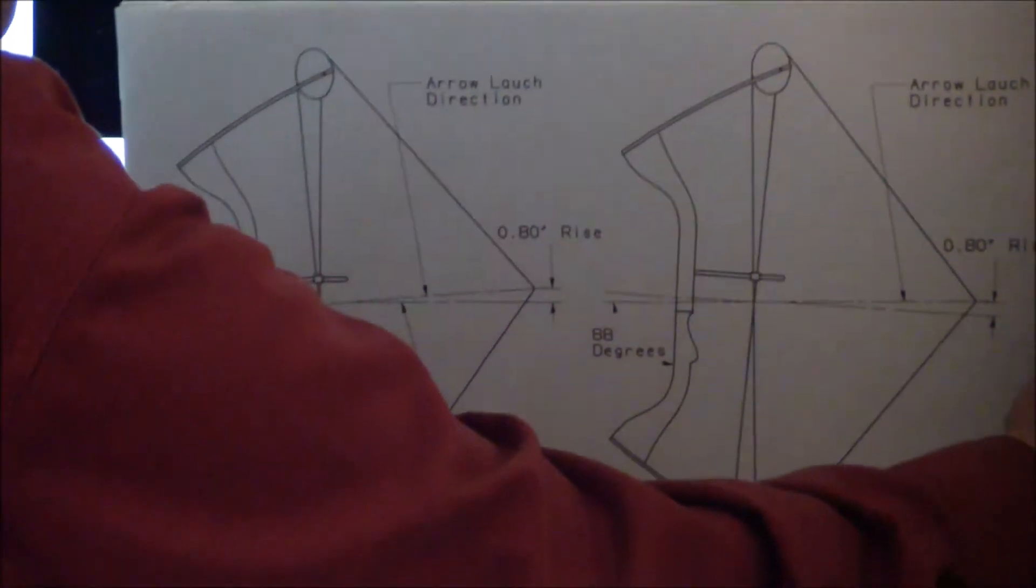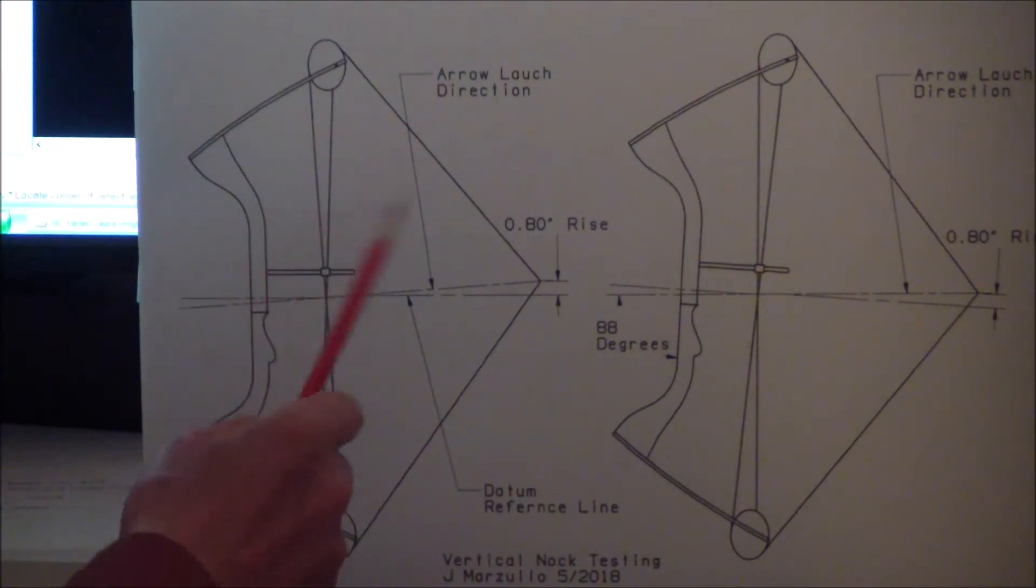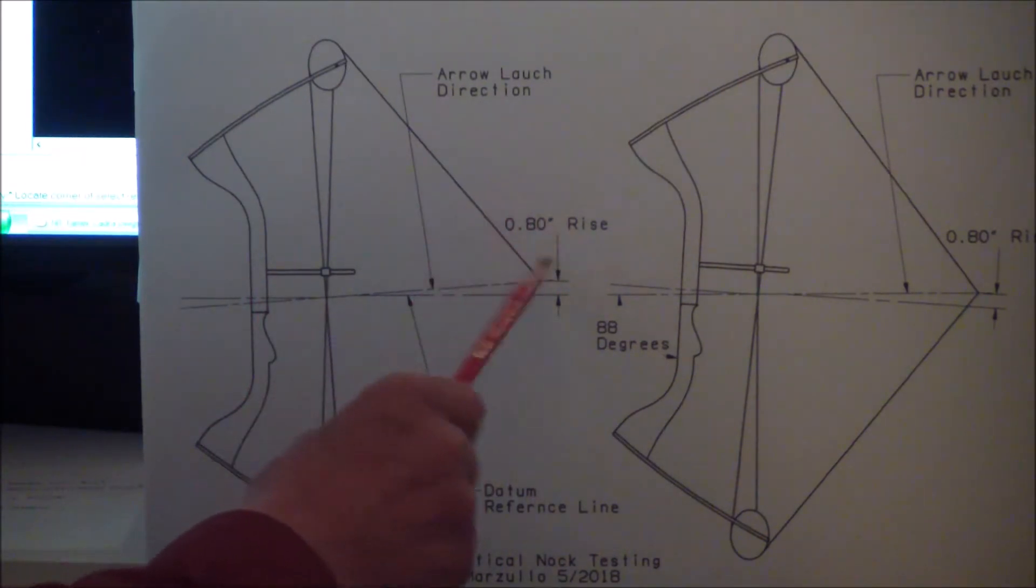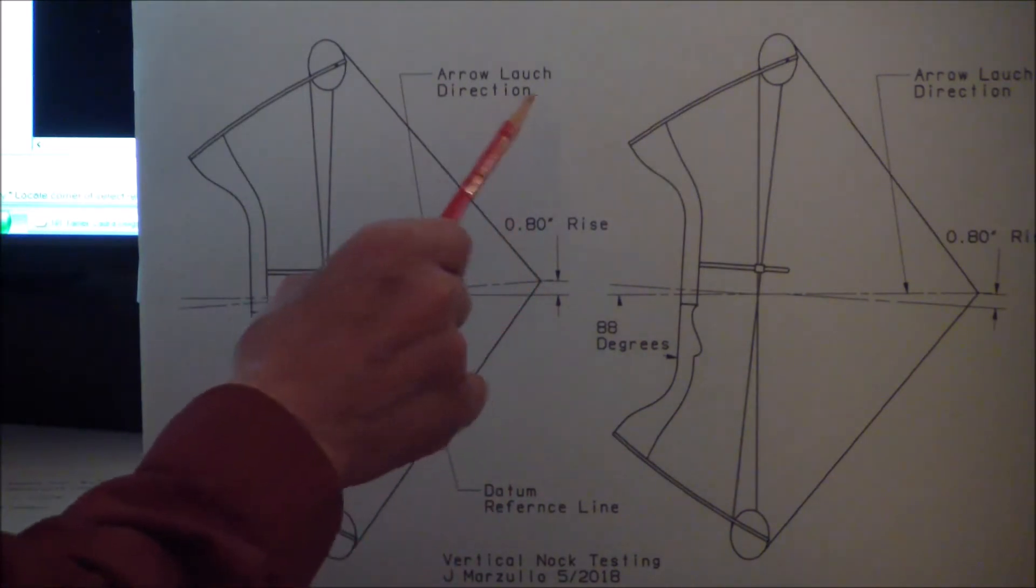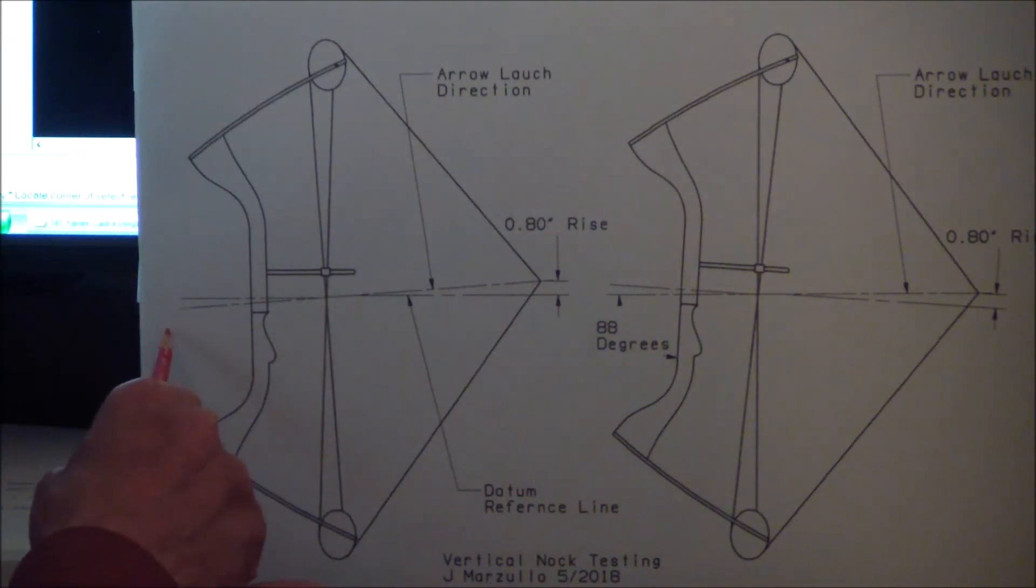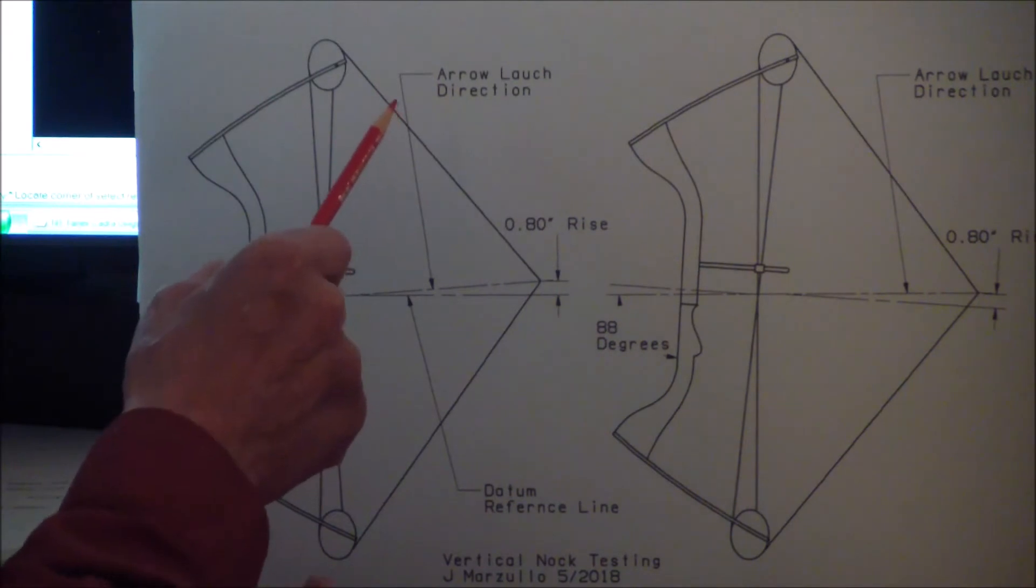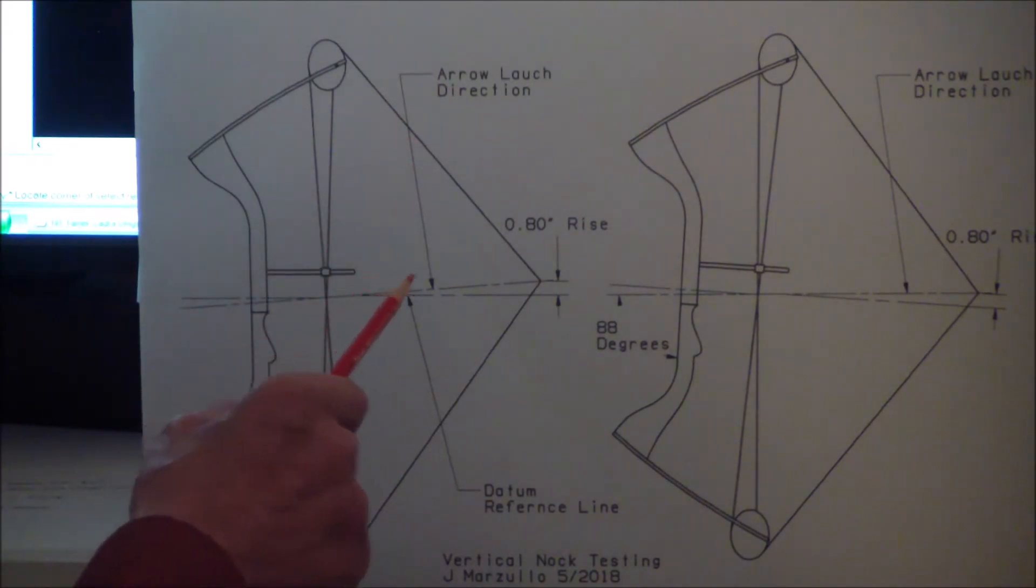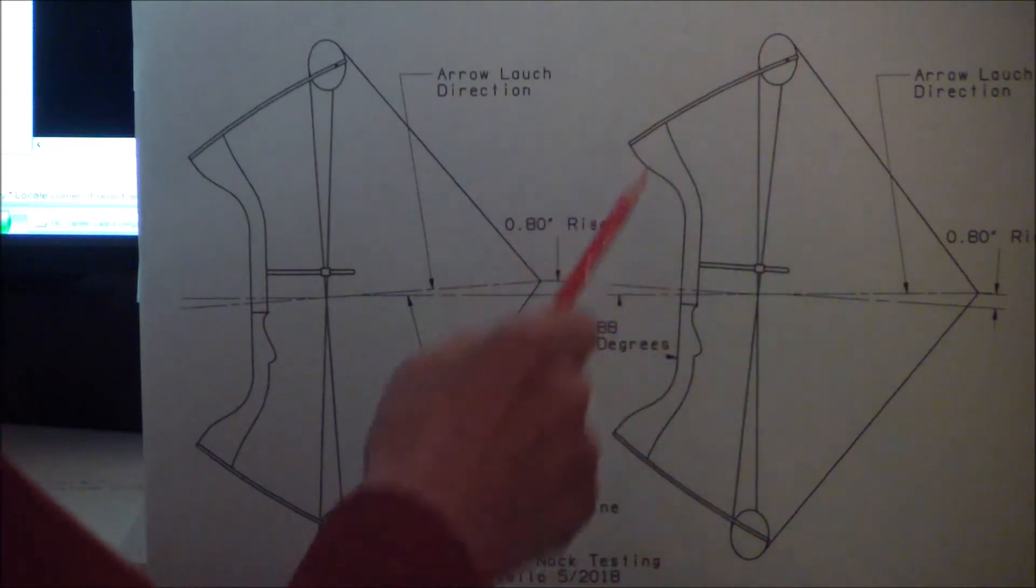So here is the same bow again drawn closer to reality. In this case, it's a bow that has about an eight-tenths of an inch rise at full draw. And here you can see here's that eight-tenths of an inch rise with regard to the datum reference line. So you can also see the arrow direction at launch is pointing down, and so in order to hit the target you've got to point the arrow launch in the direction that you want to hit.